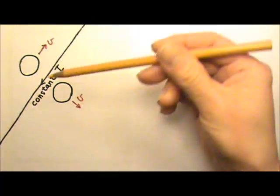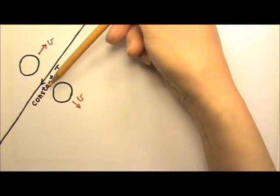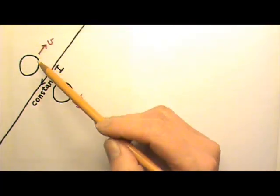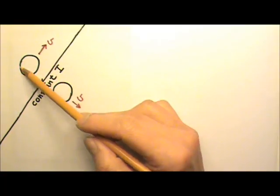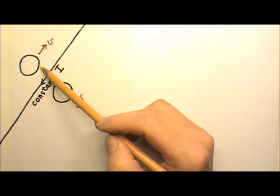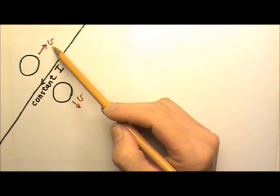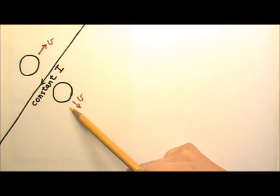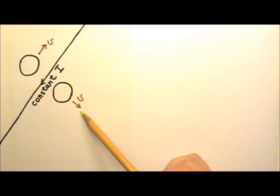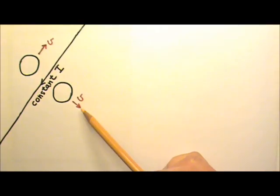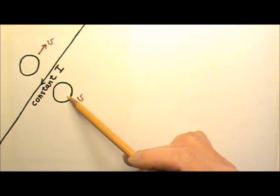There's a long straight wire with a constant current. This wire loop is being pulled that way with a velocity parallel to the long straight wire. The other wire loop is being pulled away from the long straight wire. Find the direction of induced current in each loop.